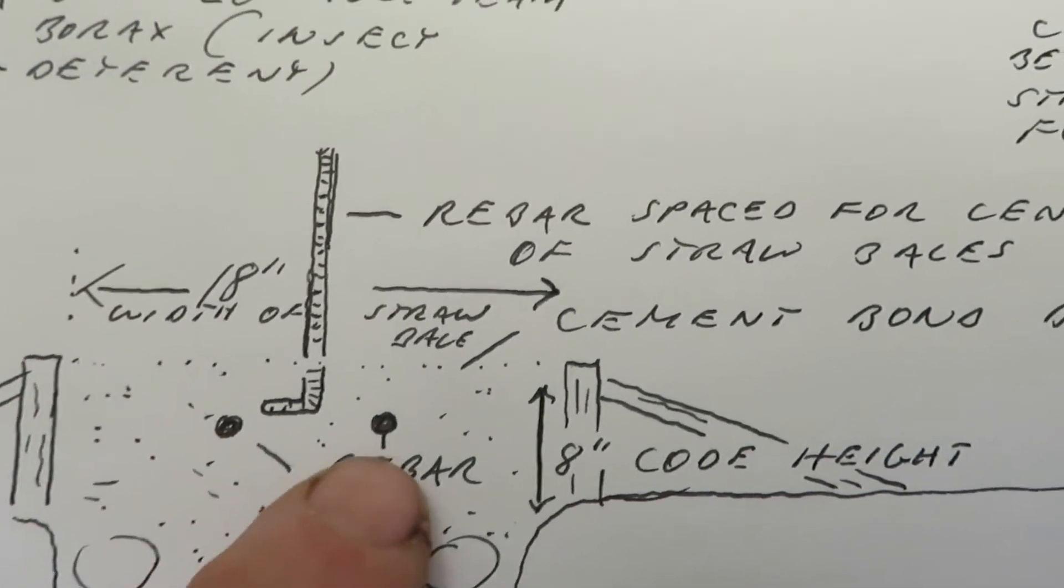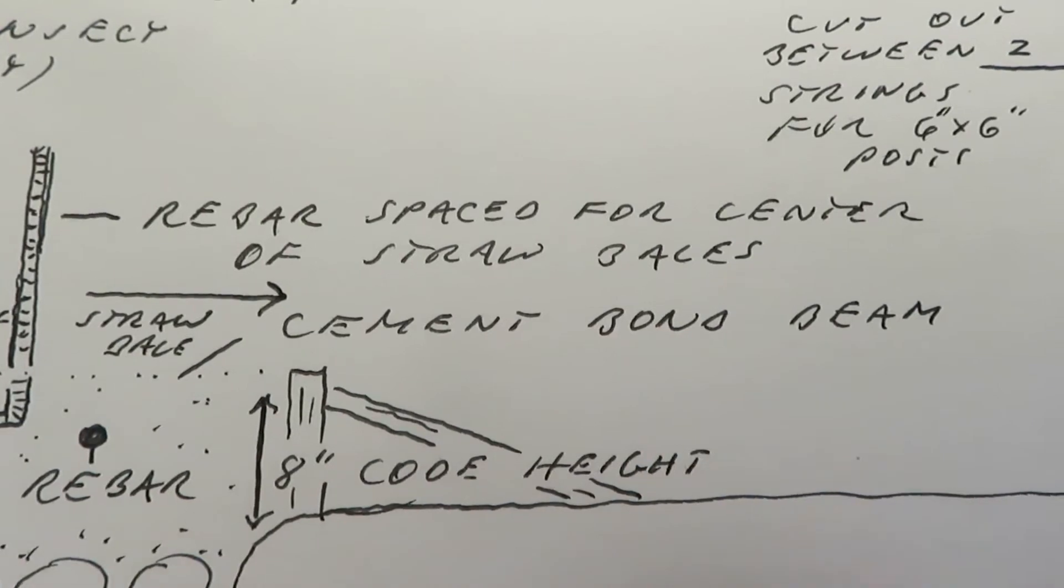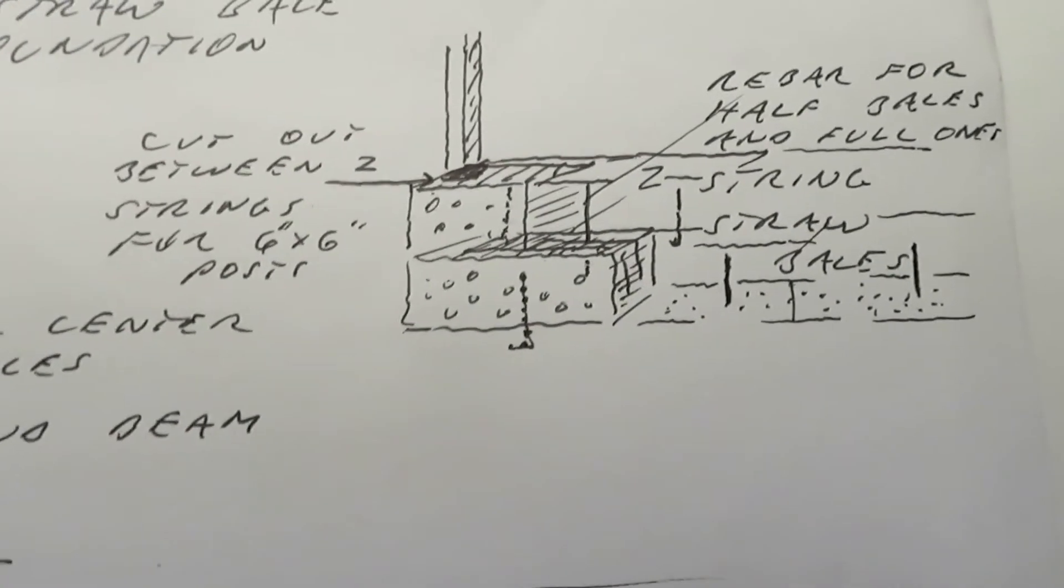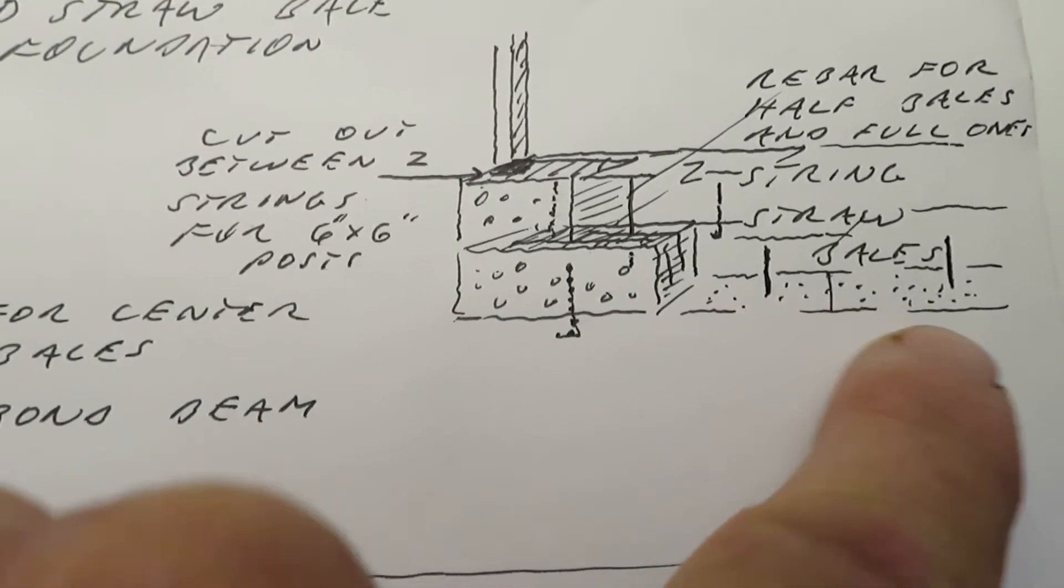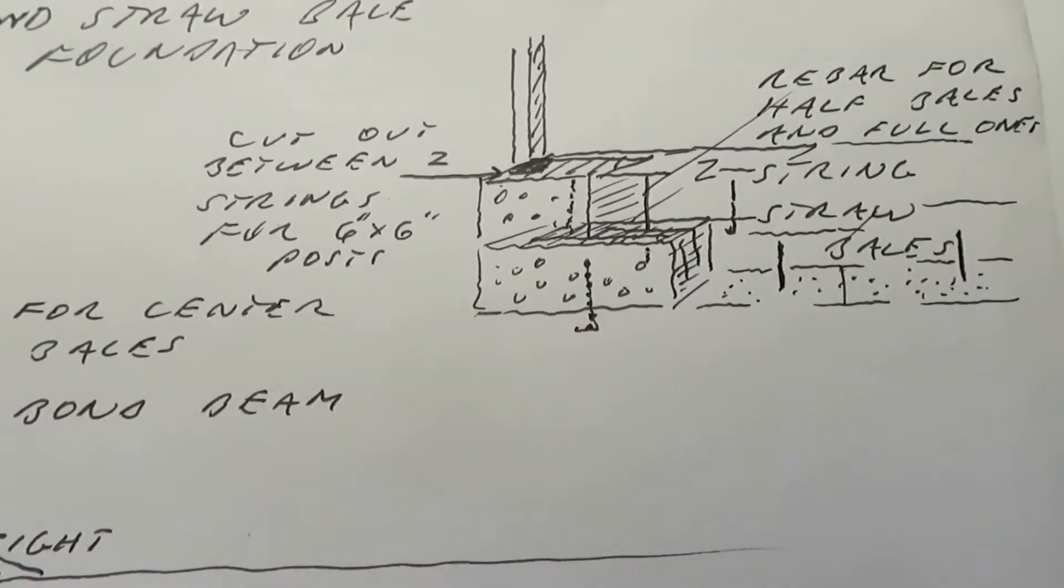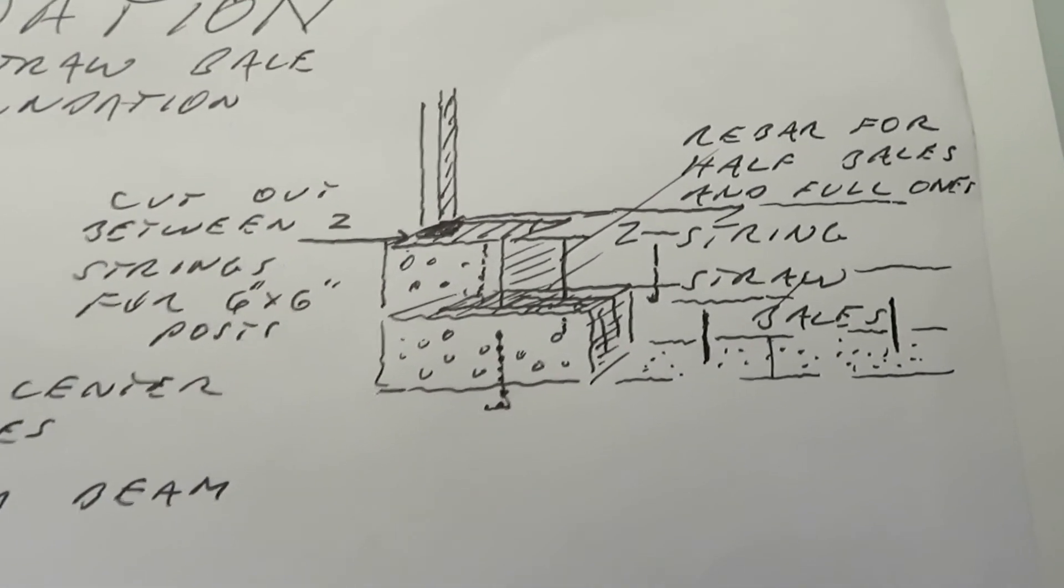The rebar was spaced for the center of each straw bale, so each straw bale would be impaled to the foundation on the bottom. The other ones would simply be driven in from above to keep the vertical until the walls could be stuccoed.